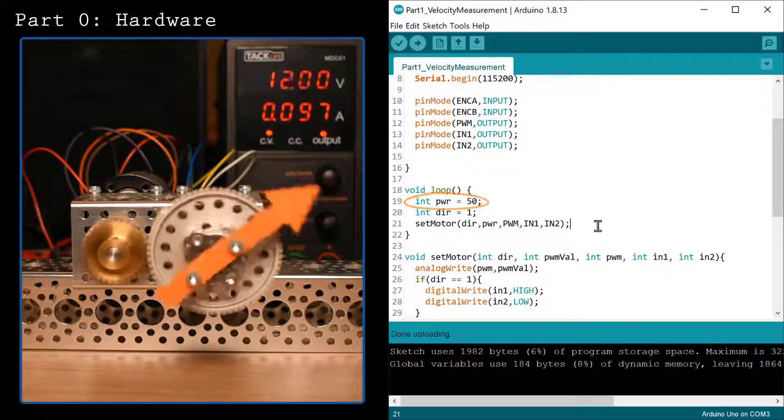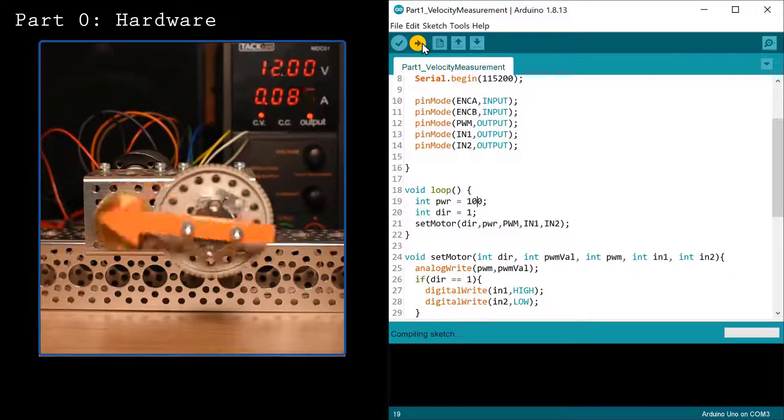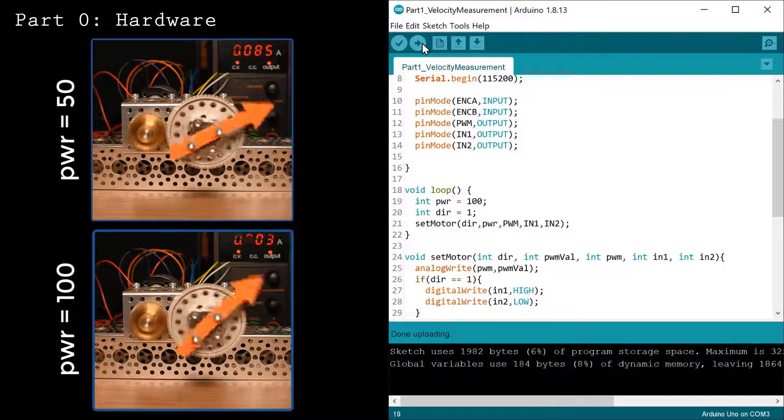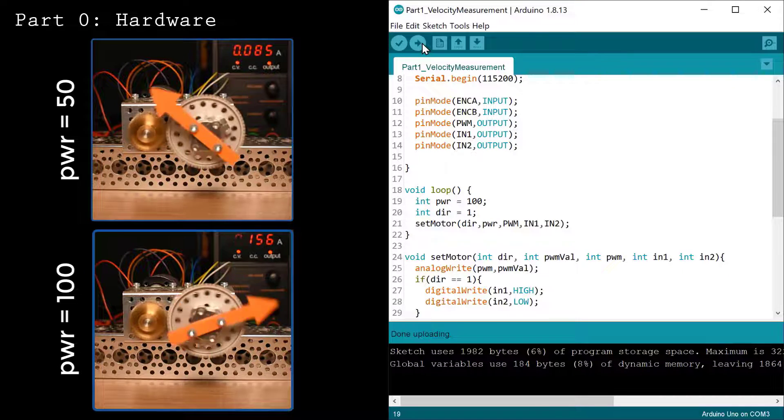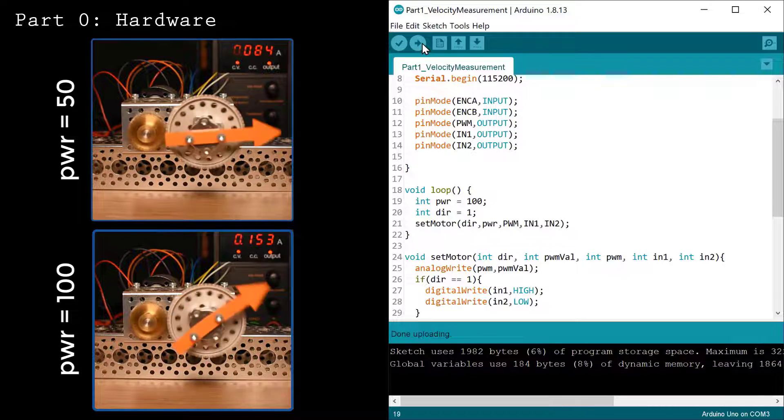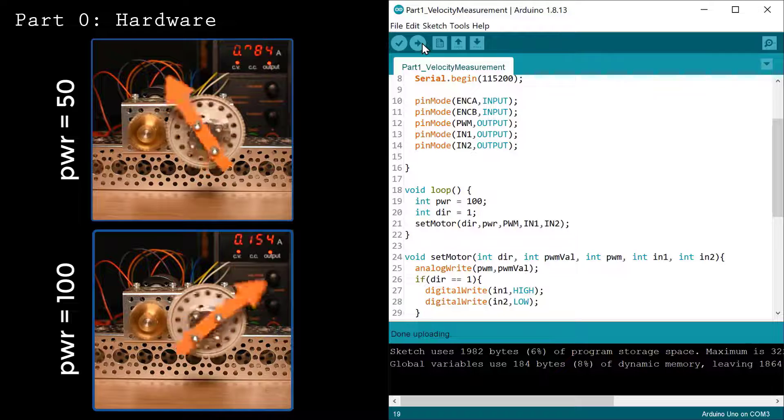When I increase the PWM value from 50 to 100, the speed does increase. But it doesn't necessarily increase proportionally, and changes in the loading conditions would also affect the actual speed. For more accurate speed control, you need to measure the velocity.